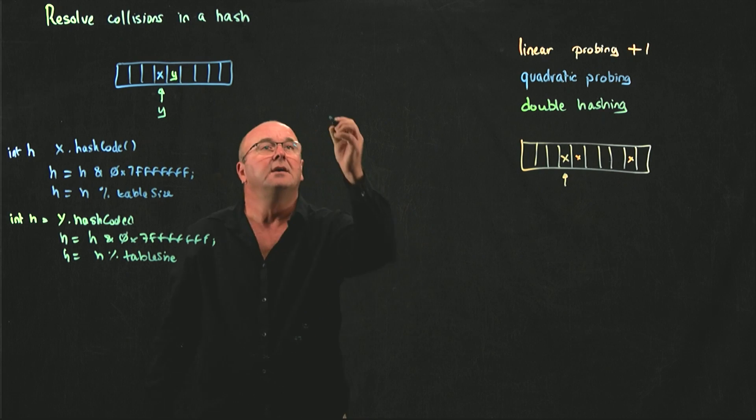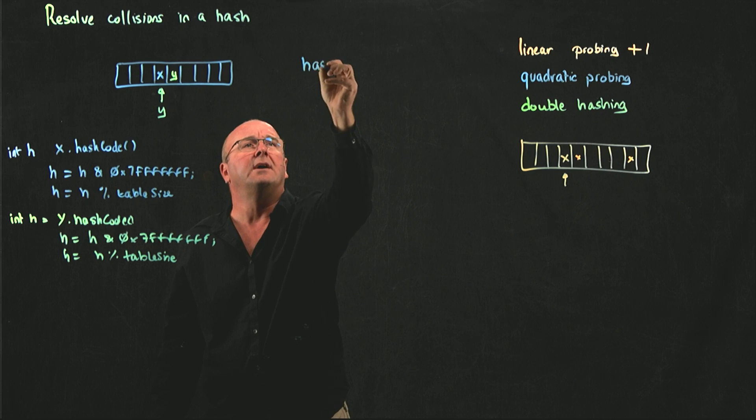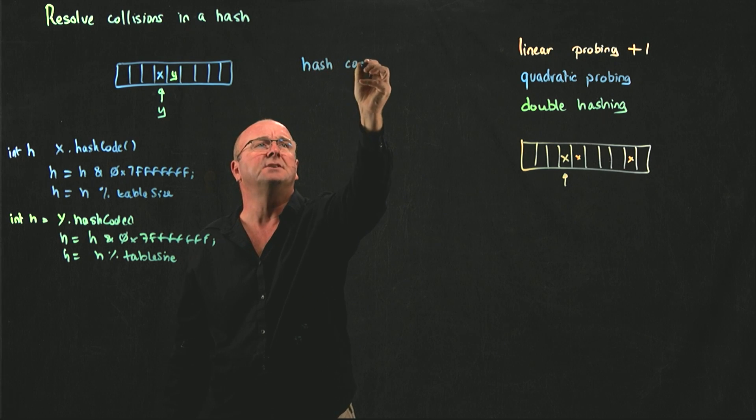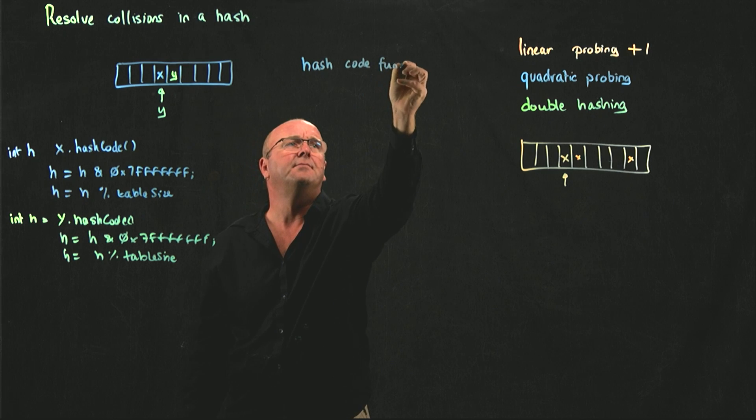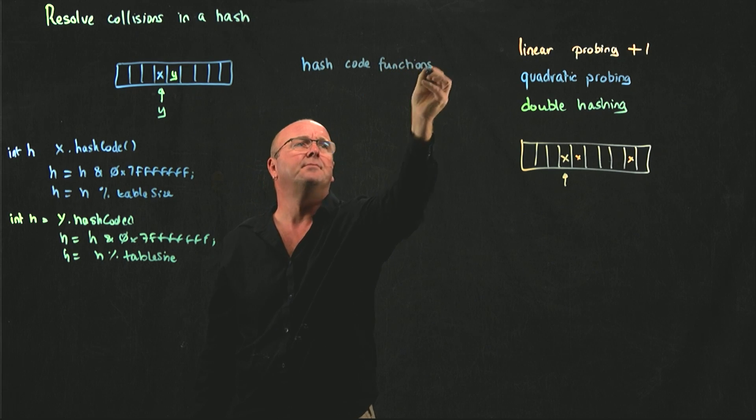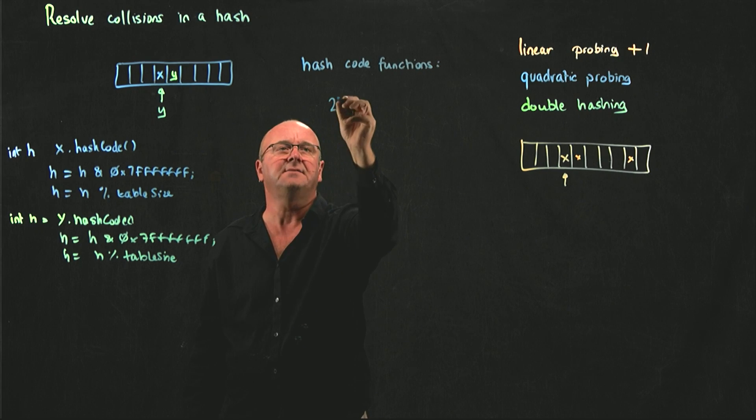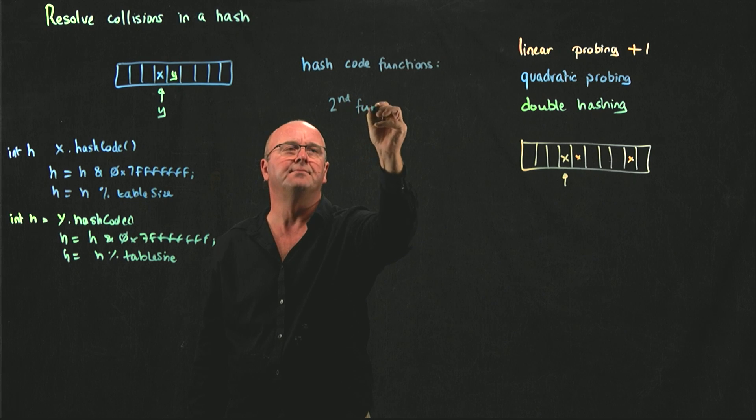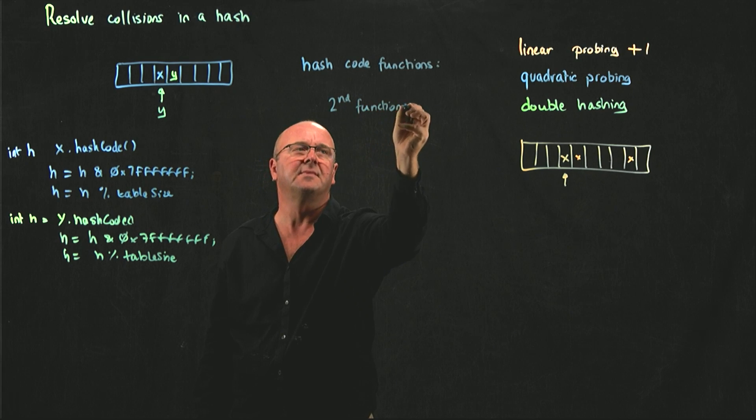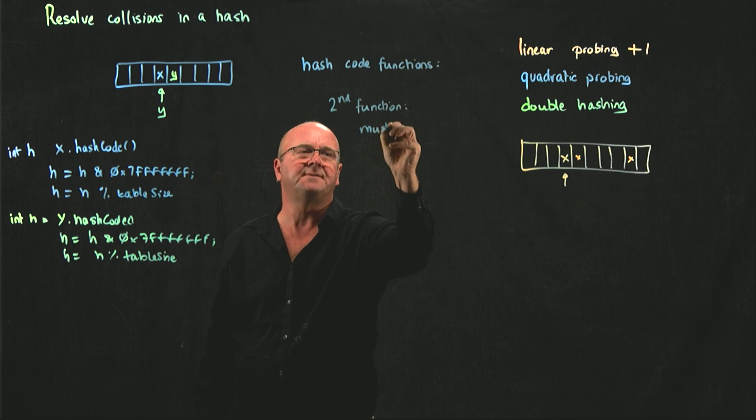So, we're going to have two hash code functions and the key is that the second function,